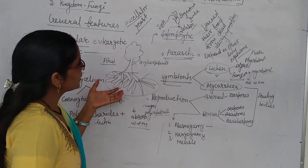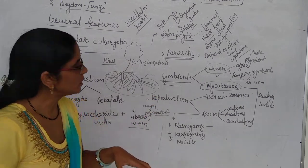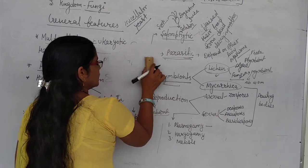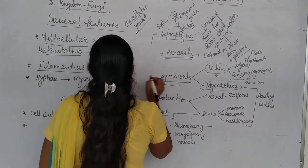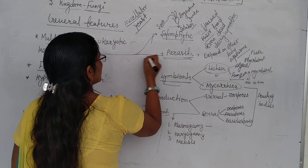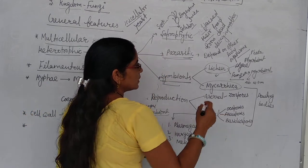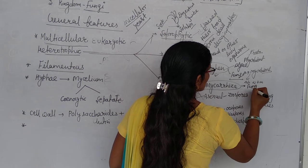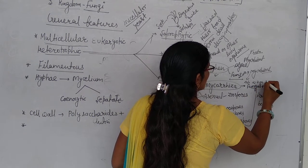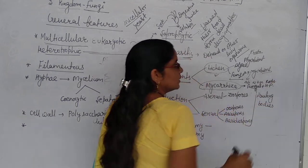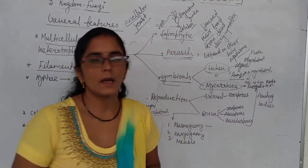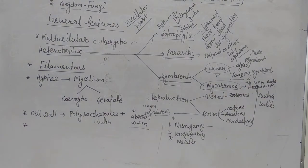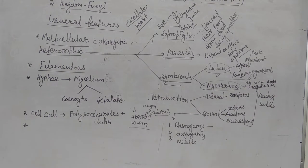As we move on - thallophytes, bryophytes, pteridophytes, and gymnosperms - gymnosperms we count in higher plants. What happens when fungus is associated with higher plants? This mycorrhizal relationship is a fungal association with the higher plants, with symbiosis. Remember one example of pinus. This is the mode of nutrition - saprophytic, parasitic, and symbiosis.